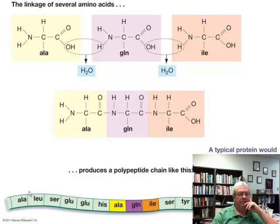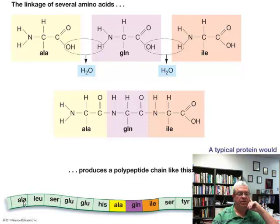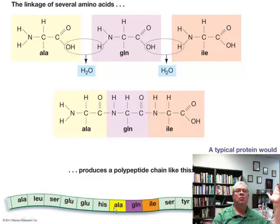What do we have in this drawing? Let's look at the bottom of it first. We see a bunch of blocks joined together with little three-letter abbreviations in each one: ala, lu, sear, glu, glu, his, ala. What in the world do those represent?